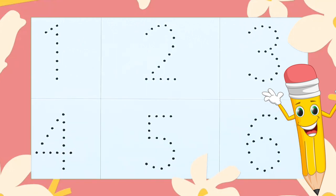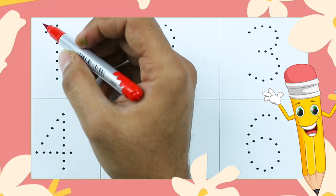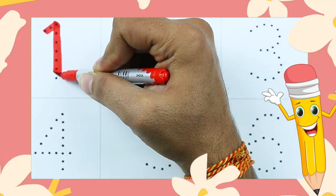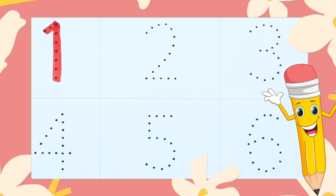How to write numbers 1 to 10. It's number 1, yes, number 1 with red color.